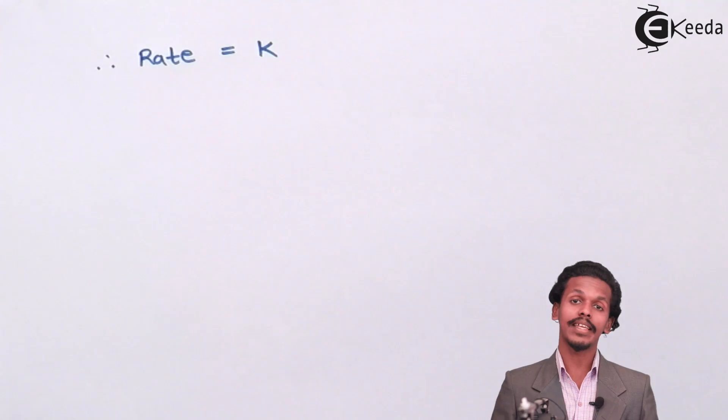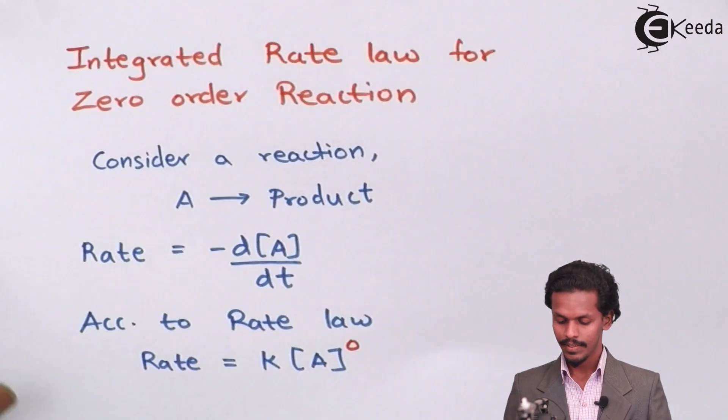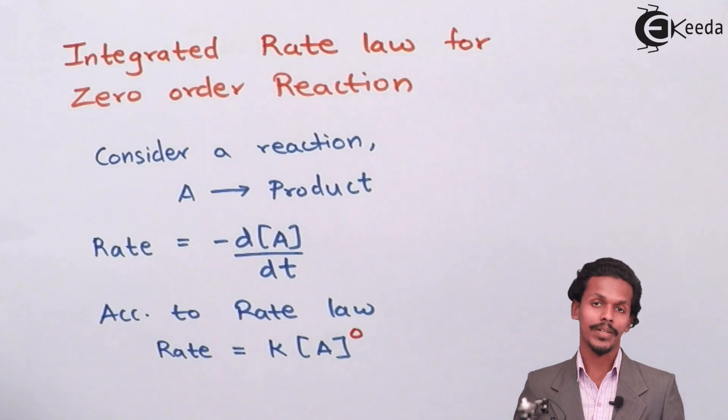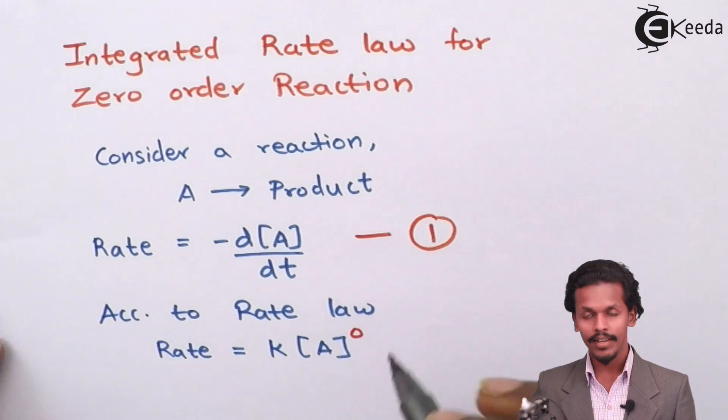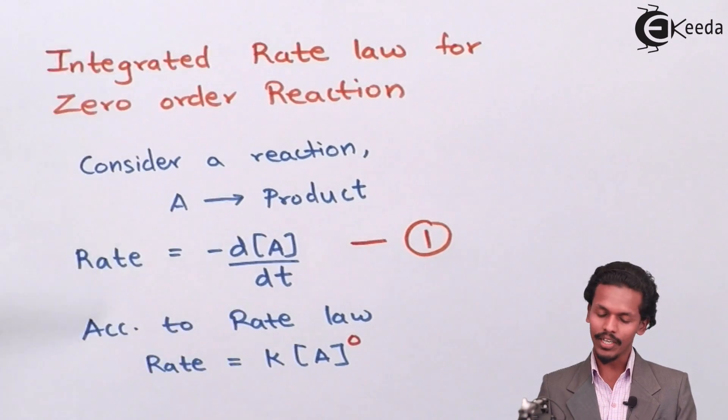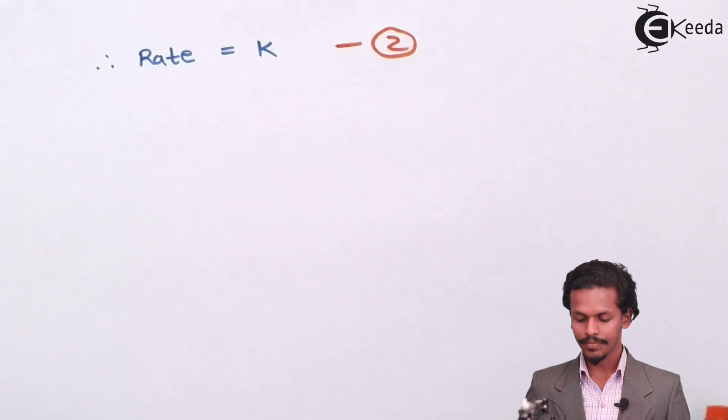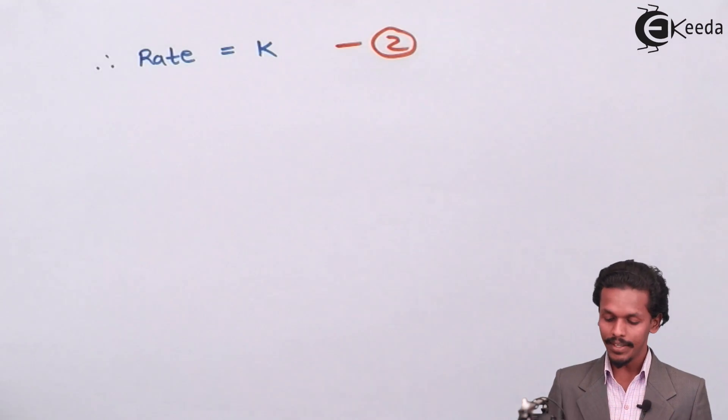But we have also written the rate earlier, which is this one. So I would mark this equation as equation 1 and the equation that we have got right now as equation 2. So equating both equations 1 and 2, we get...